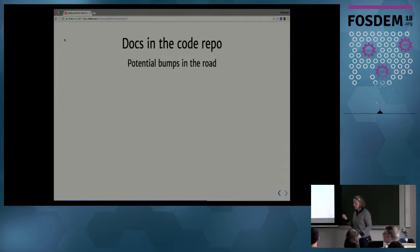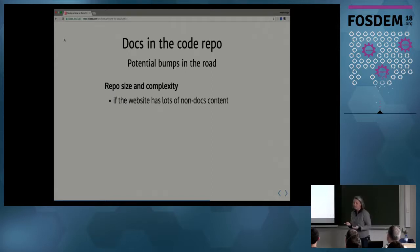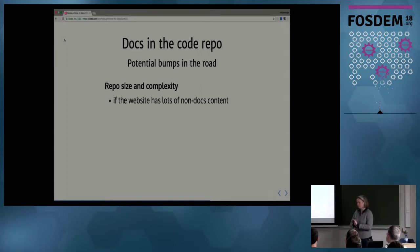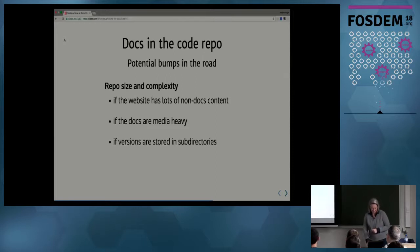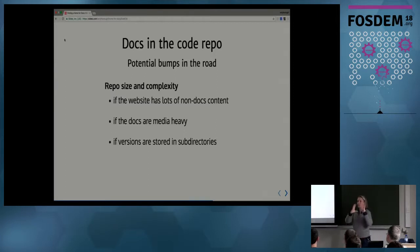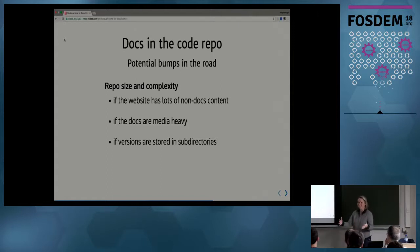There are some bumps in the road to balance against those benefits. Repo size and complexity can be an issue — if the website has lots of non-docs content like a blog, lots of video, or heavy tutorials, that makes your code repo really bulky. Another concern is if versions are stored in subdirectories. Some tools take a snapshot of the docs and copy them into a subdirectory in the repo, resulting in a whole bunch of copies of your docs — that's not very efficient and you really don't want that inside your code repo.